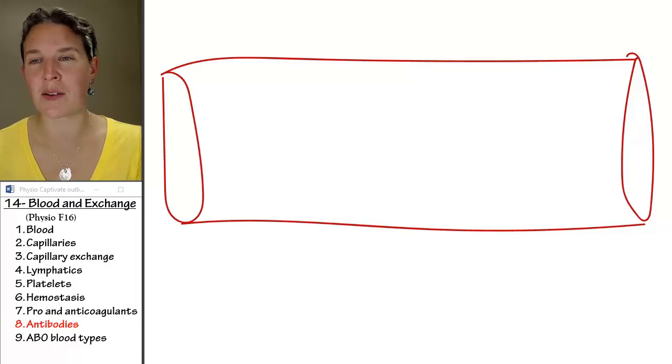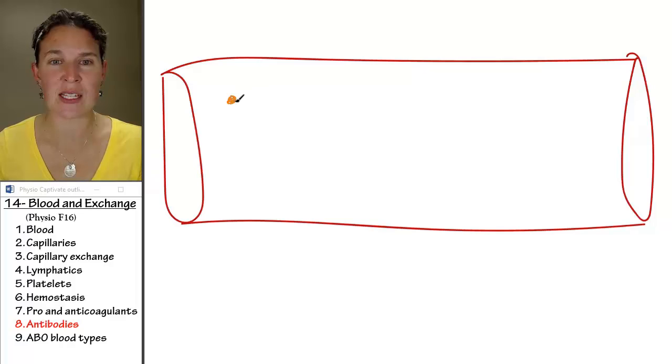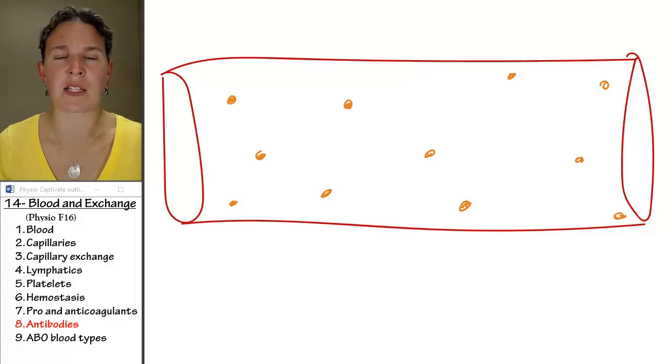One of the things that we talked about in capillary exchange was the presence of these plasma proteins in the blood. And tell me, what did the plasma proteins have to do with? Why did we talk about plasma proteins?